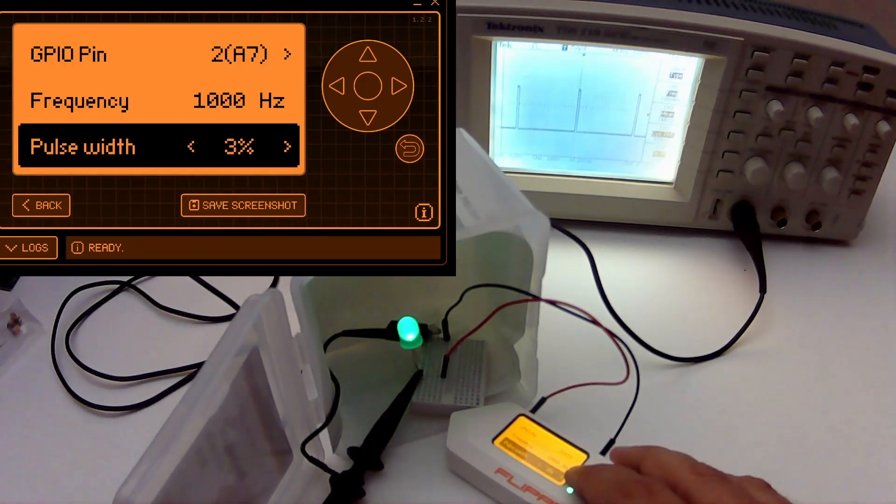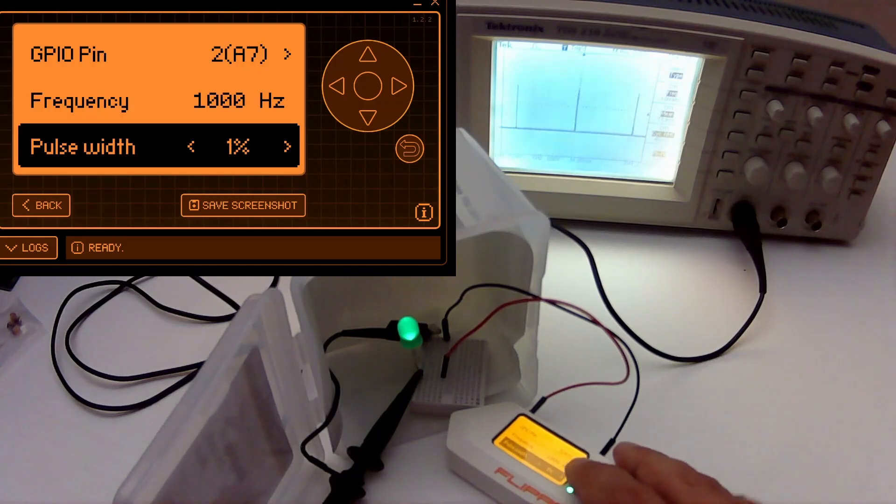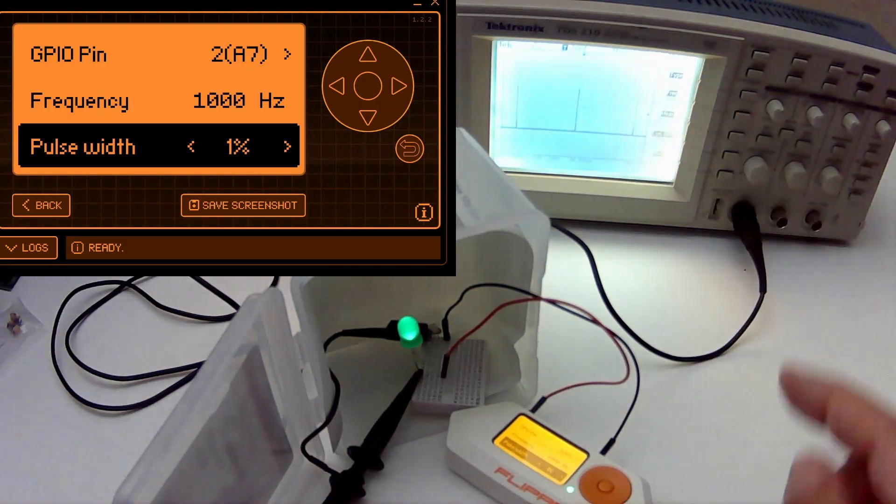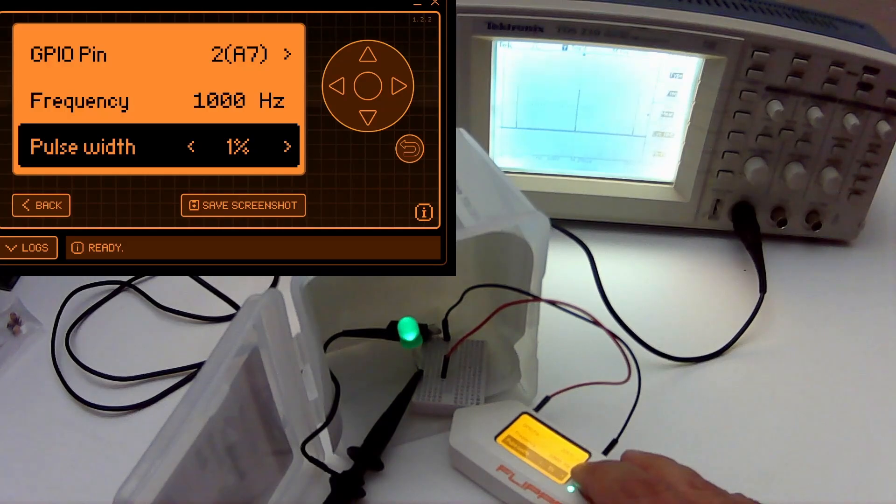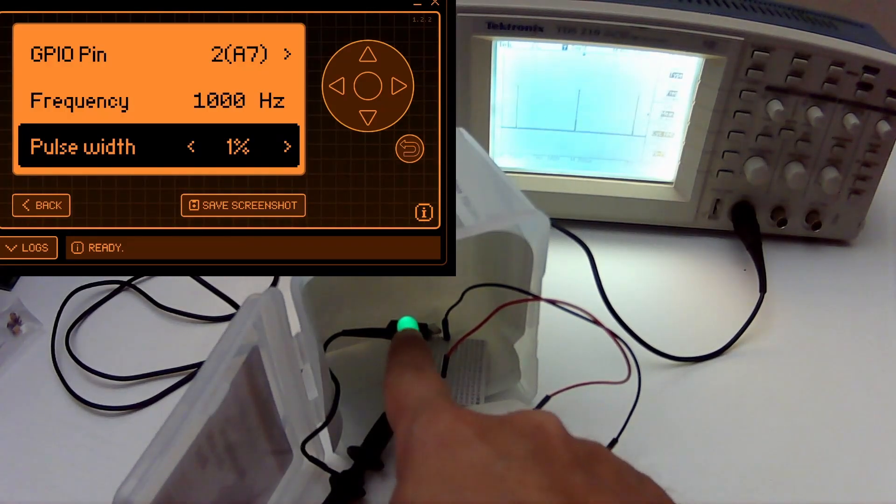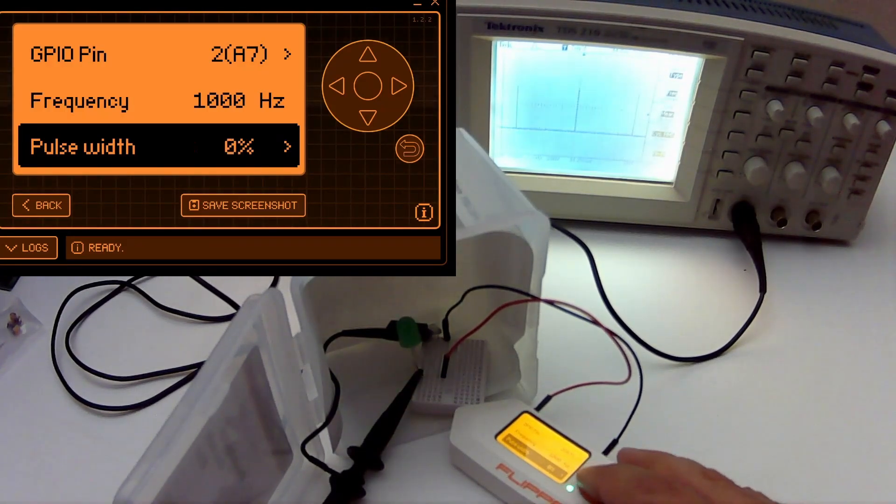Three, two, one. You see a small spike as we're on only one percent of the time but even at one percent we can still see the light's on. Then at zero percent there's no more pulses so the light turns off.